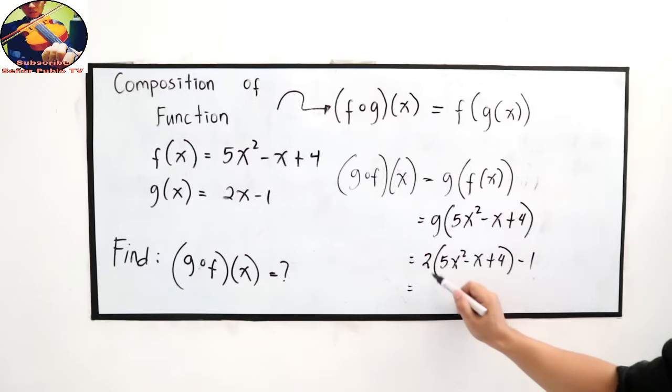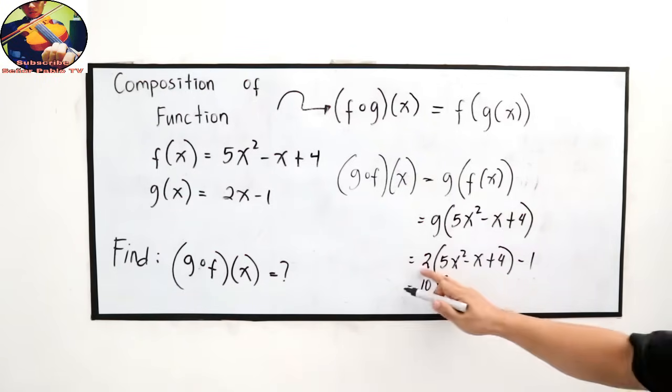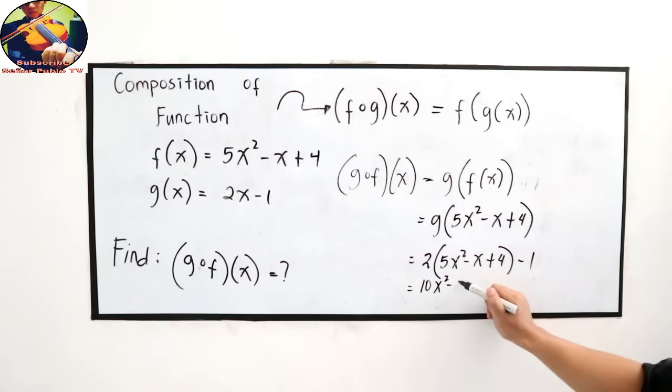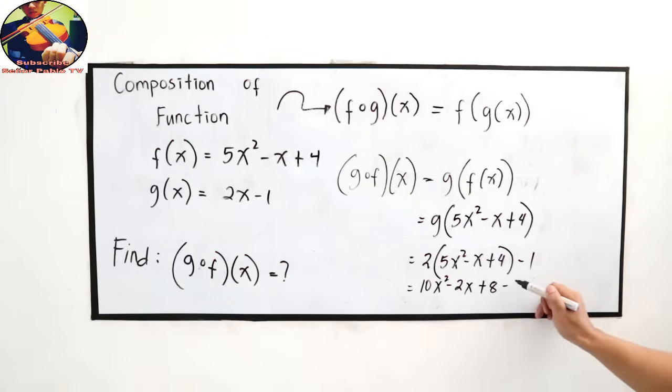Distribute. So 2 times 5, 10x squared. 2 times negative x, negative 2x. 2 times 4, positive 8. And copy, negative 1.